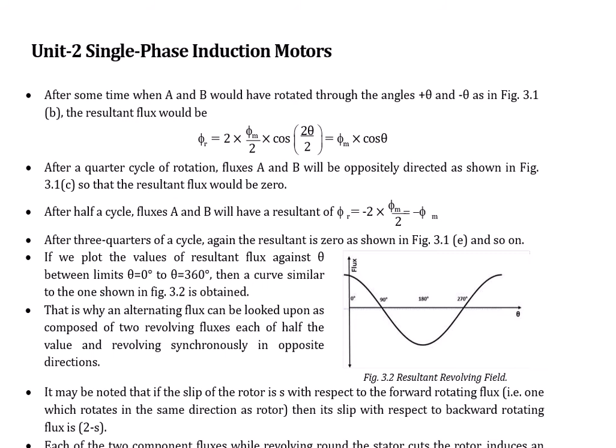If you are not familiar with RMF — rotating magnetic flux — check out the video on three-phase induction motor about RMF to understand what I am discussing. The flux here is sinusoidal, not constant. Due to this sinusoidal nature we have alternating flux but not rotating flux. That is why an alternating flux can be looked upon as composed of two revolving fluxes, each of half the value, revolving synchronously in opposite directions.